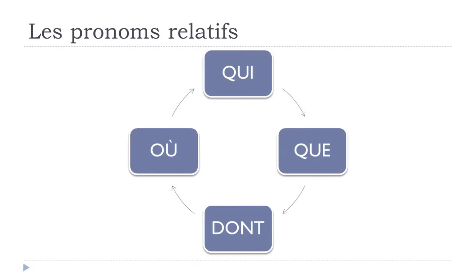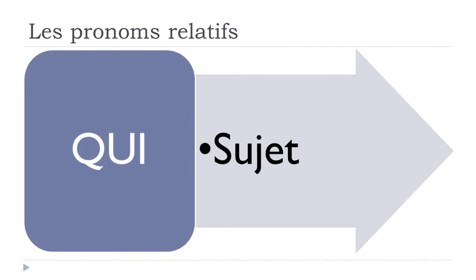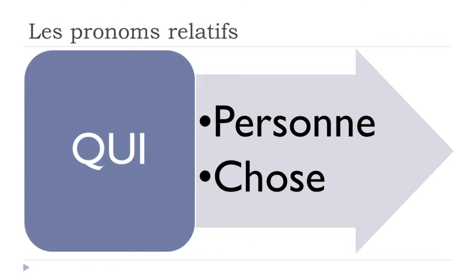Pronouns, as usual, are little words that you use to avoid repetition if something was already said, or if you want to combine two different sentences into one. The first pronoun is 'qui'. Normally we use it because it's the subject — it can be used for a person or a thing: pour une personne ou une chose.